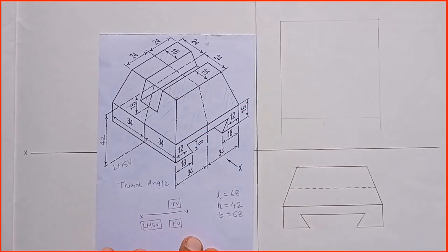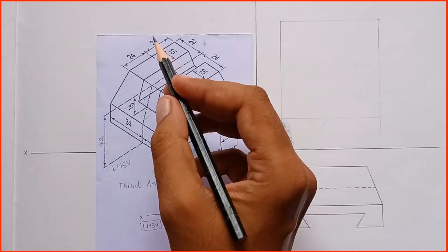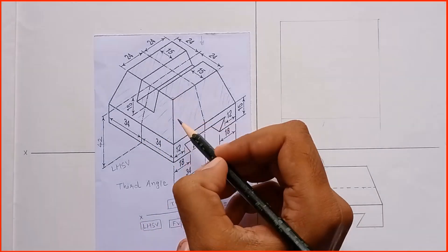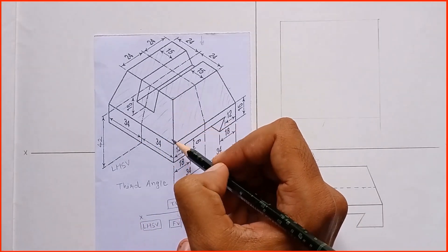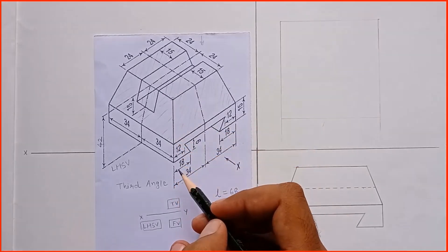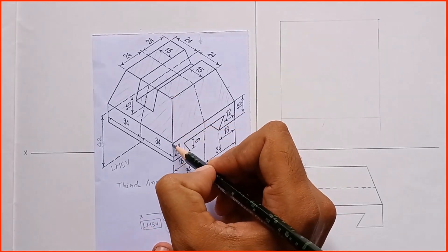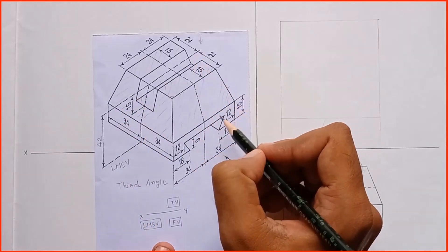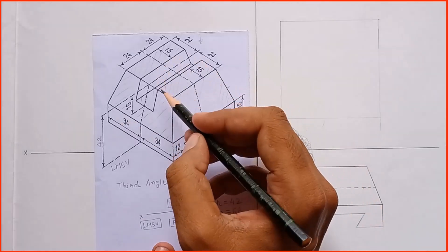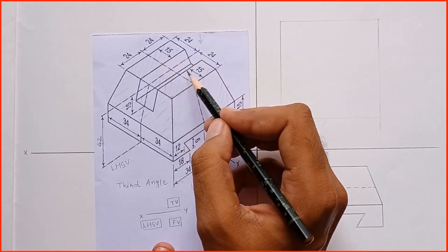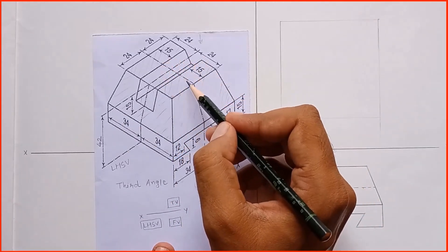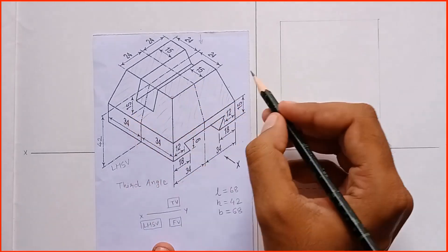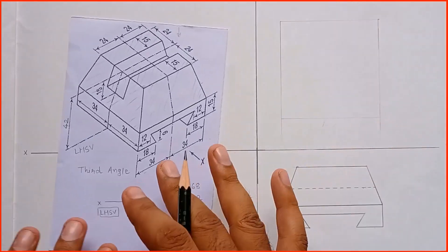When we see from the top, the maximum dimension is 68 by 68. These are the inclined edges which are visible in a top view. Let's first draw this outer rectangle which is visible in a top view. In that rectangle we can fix or project all the faces. The dimension of that rectangle is 68 by 68, so we have to make this a visible line.